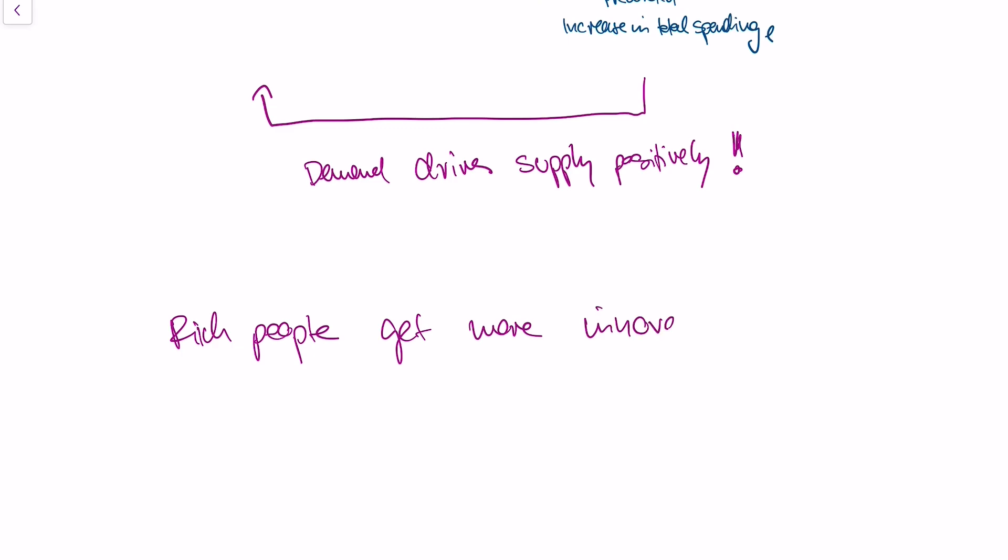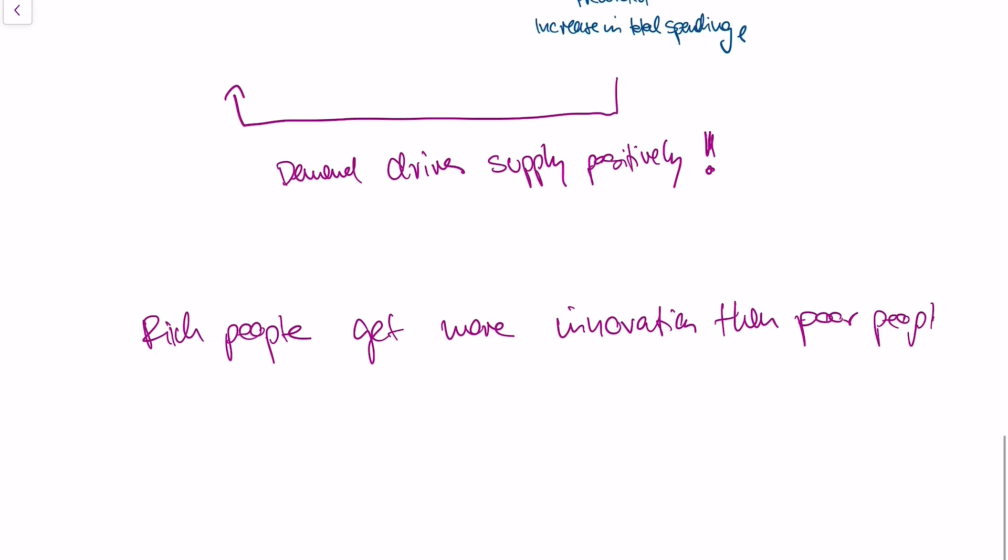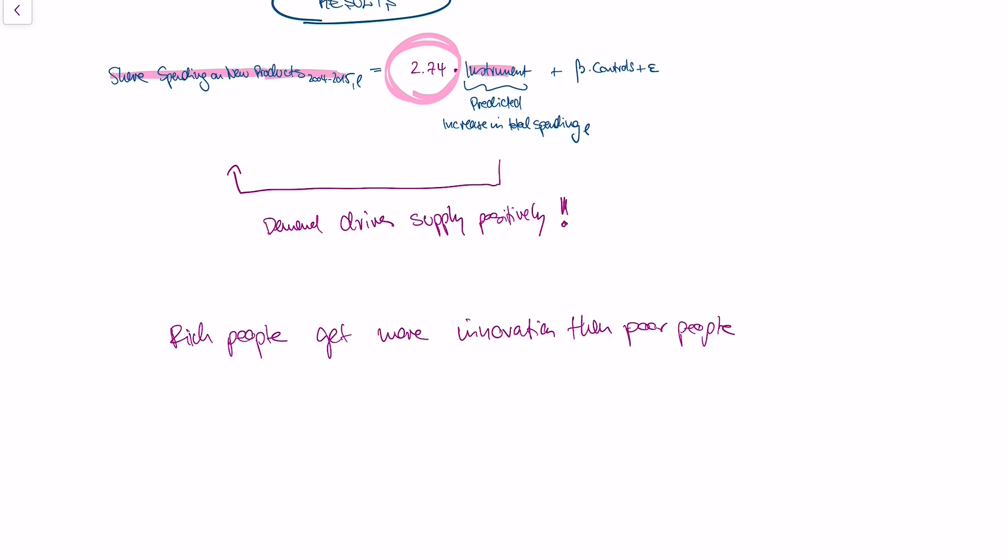And what this says is that actually rich people get more innovation than poor people. And to go to the punchline of the paper, this says that poor people actually have higher inflation. If you have any other questions on this, please let me know in the comments.